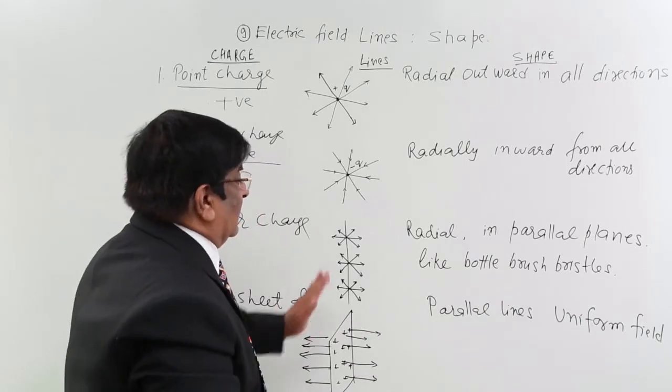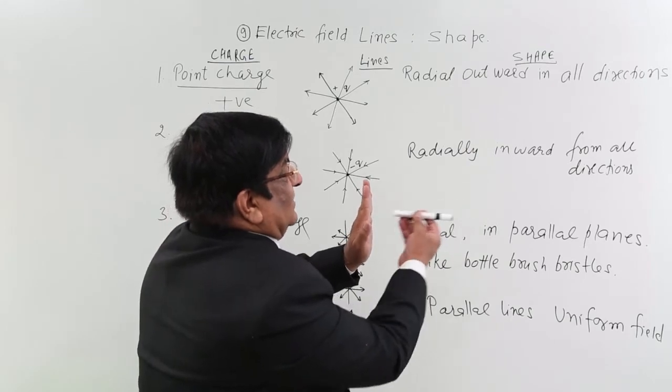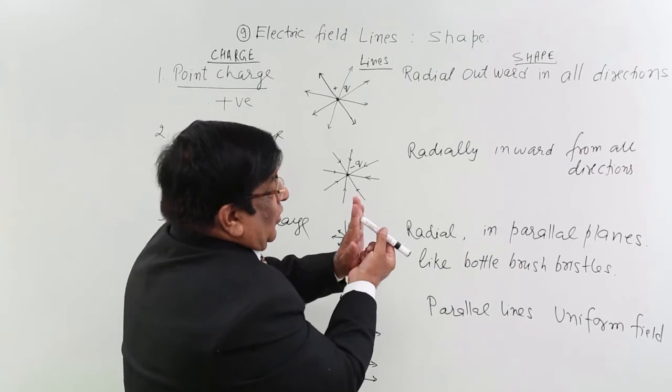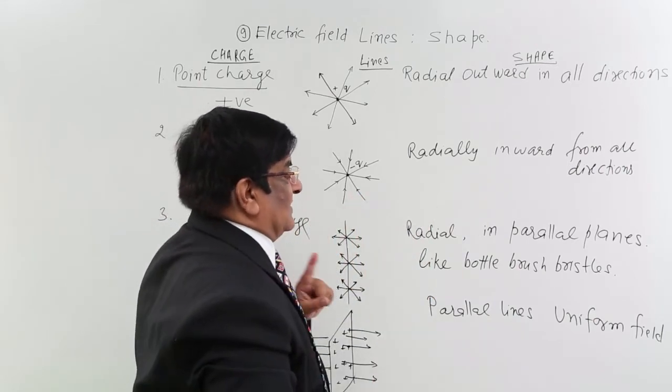Then, we have plane sheet. If this is a plane sheet, here, the lines will be in this direction. Here, the lines will be in this direction. This way and they will not go this way because they will have to intersect with other. That is not allowed.